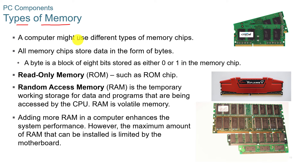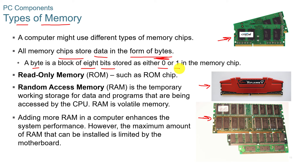There are different types of memory chips depending on which type of computing device you have — laptop memory modules are smaller than desktop ones. Memory chips store data in the form of bytes. A byte is a block of eight bits stored as either a one or a zero. A bit is a one or a zero, and eight bits make a byte.